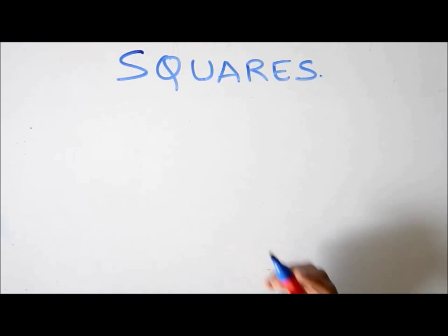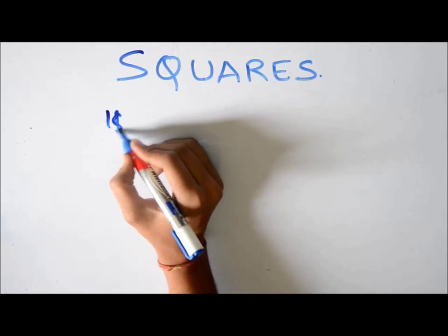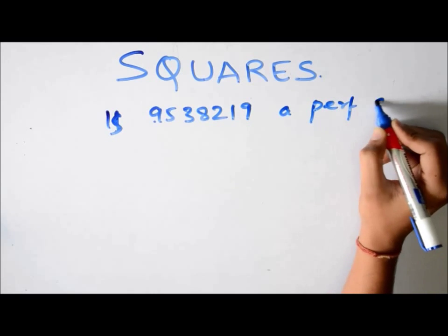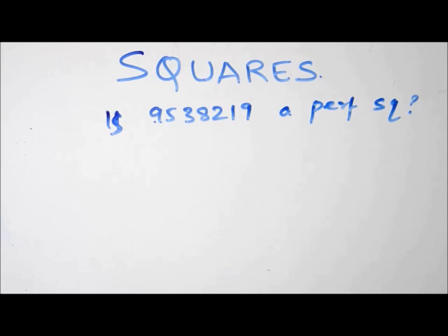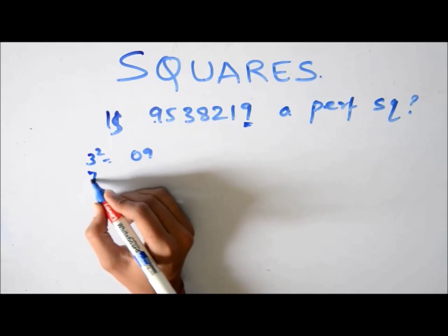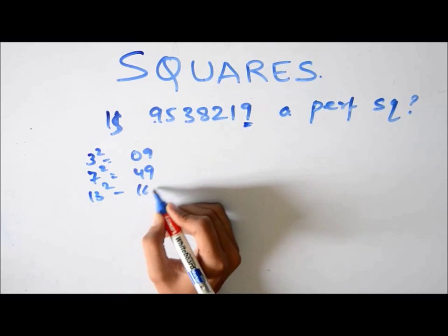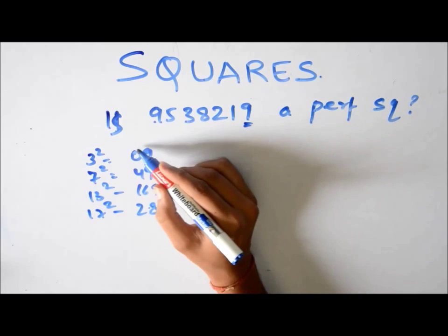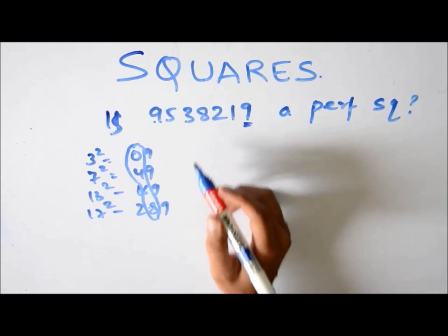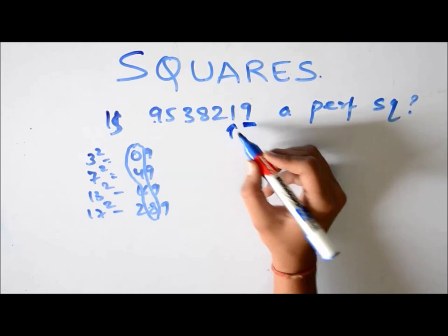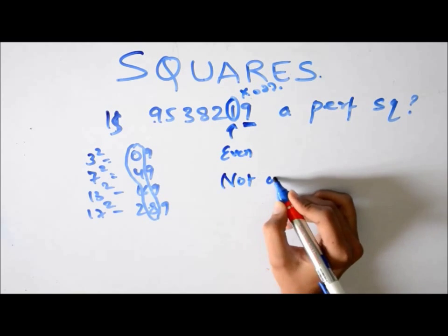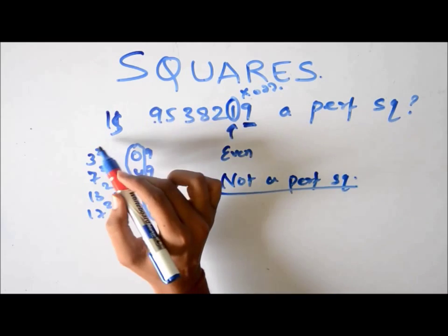Now suppose there are certain properties of squares. Now suppose there is a question like is 95387182119 a perfect square? Now how do you know if this is a perfect square or not? Let's see. For all squares which end with 9, we see that the second last digit is not an odd number. It's an even number or 0. So we can say that all squares ending with 9 must have a second last digit which is even. Now in this case, is it even? No. It is odd. So we can say that it is not a perfect square.